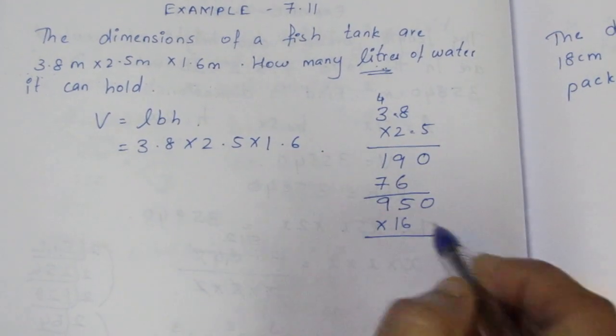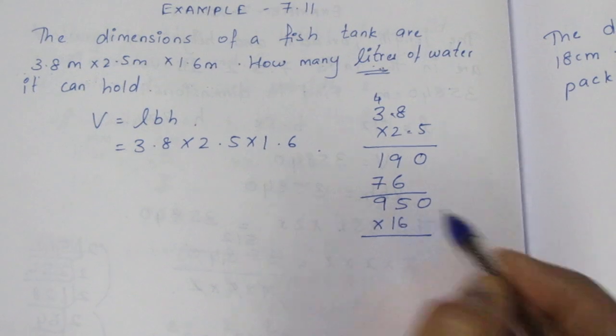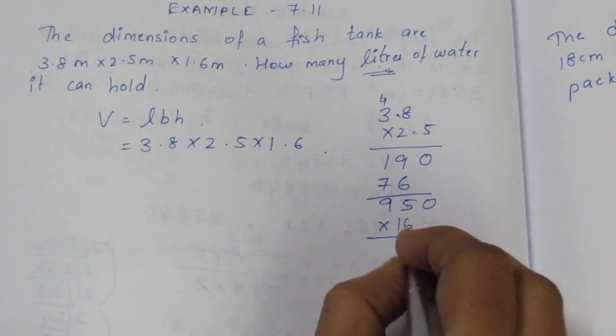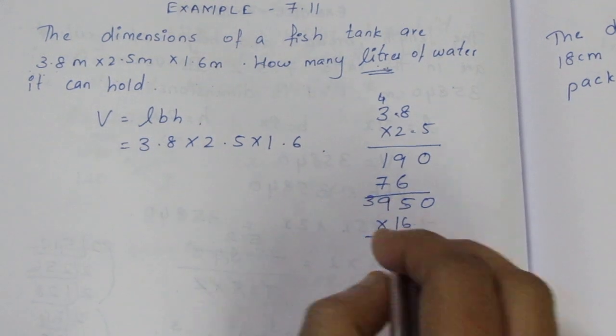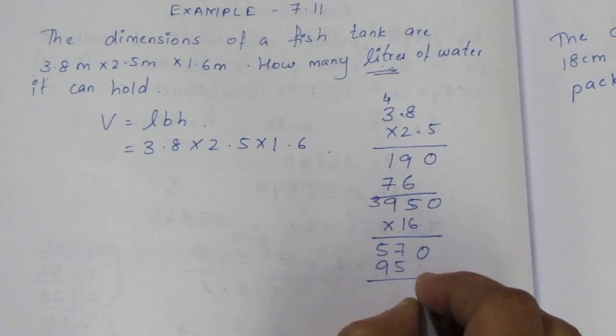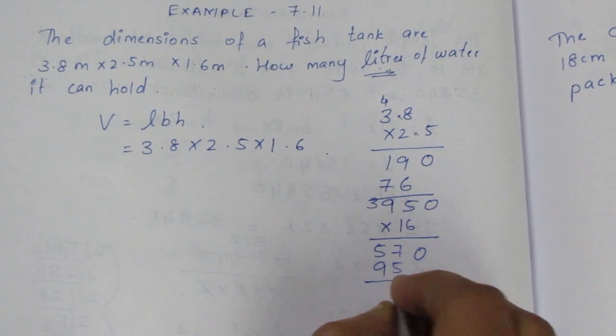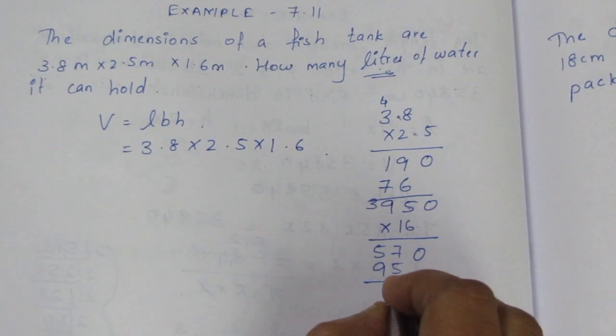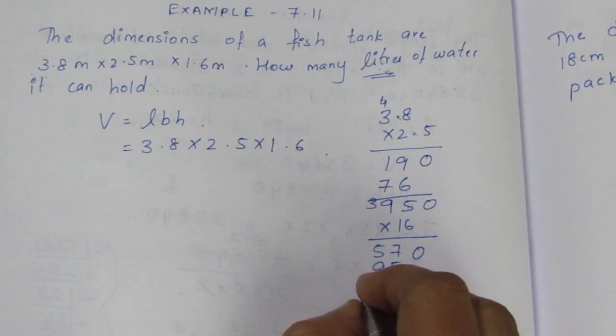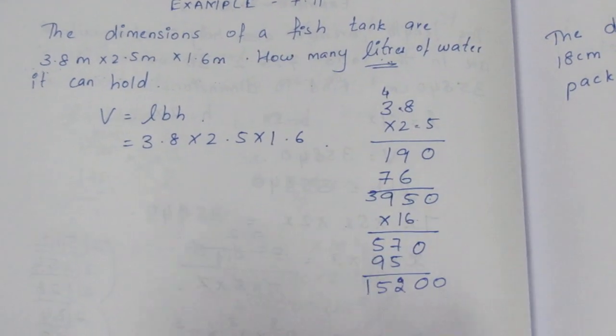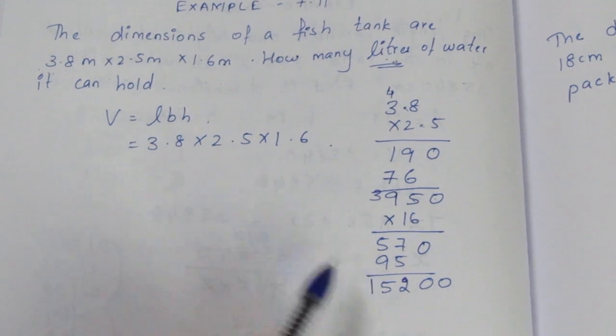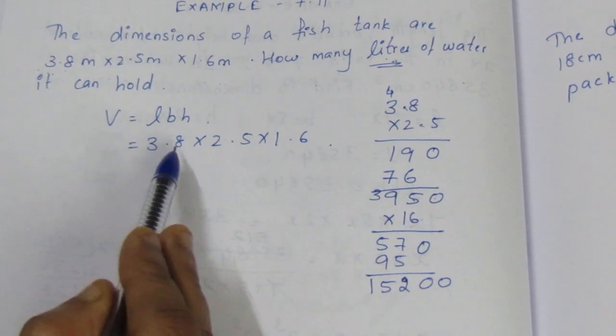Now multiply 9.5 times 1.6. 6 times 5 is 30, 6 times 9 is 54, total 57. 1 times 95 is 95. Adding we get 15.2. Counting decimal places from both numbers, the result is 15.2 cubic meters.